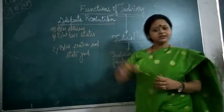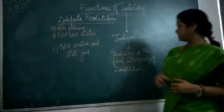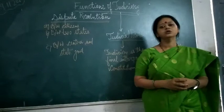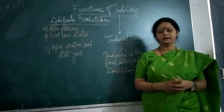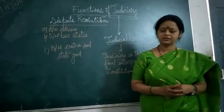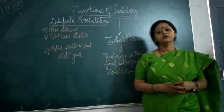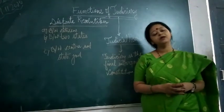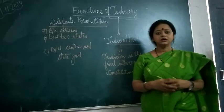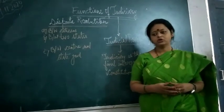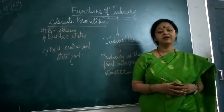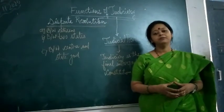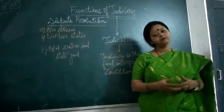So first function will be dispute resolution. Now come to the second function. The second function is judicial review. We all know that laws are made by the Parliament of the country. But you know that some of the laws are very controversial. People think that it favors very few people and it is against majority of the people. So in case if there is a controversial law, in case if people think that their fundamental rights are violated, in case if citizens feel that the laws that are made by the parliament are against the Constitution, they can challenge that.